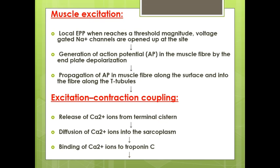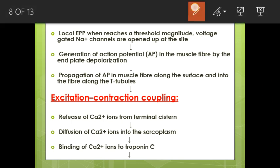Then we have muscle excitation. When the local end plate potential reaches a threshold magnitude, voltage-gated sodium channels open, generating an action potential in the muscle fibres. This action potential propagates along the surface and into the fibre along the T-tubules.